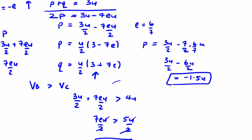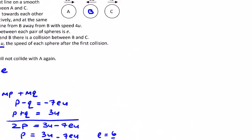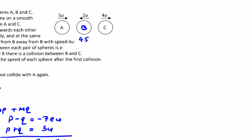What's happening with q? Q has a speed of 3u over 2 plus 7 over 2 times 6 over 7 times u, so that's 3u over 2 plus 3u, equal to 4.5u. We have to show what happens when it collides with C. C is traveling at 4u, we now have 4.5u for B.